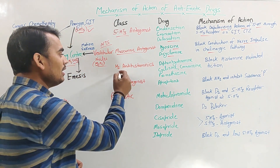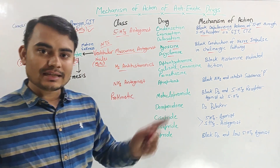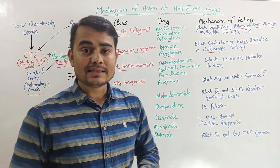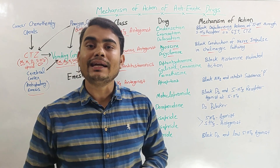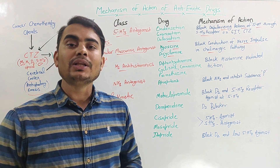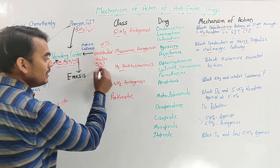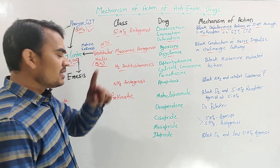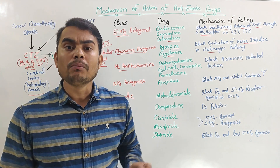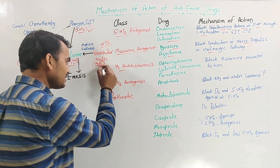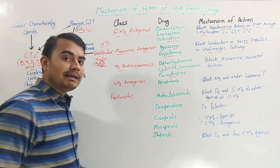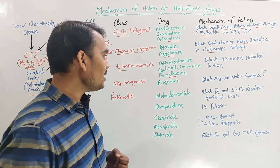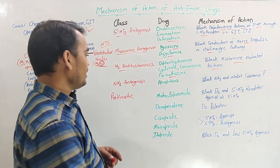H1 antihistamines used as antiemetics include diphenhydramine, cyclizine, cinnarizine, and promethazine. These inhibit the H1 receptor, which is located in the NTS center, the vomiting center, and the CTZ. For motion sickness, the main receptor involved is H1, so promethazine is the drug of choice for motion sickness, blocking the histamine-mediated action.